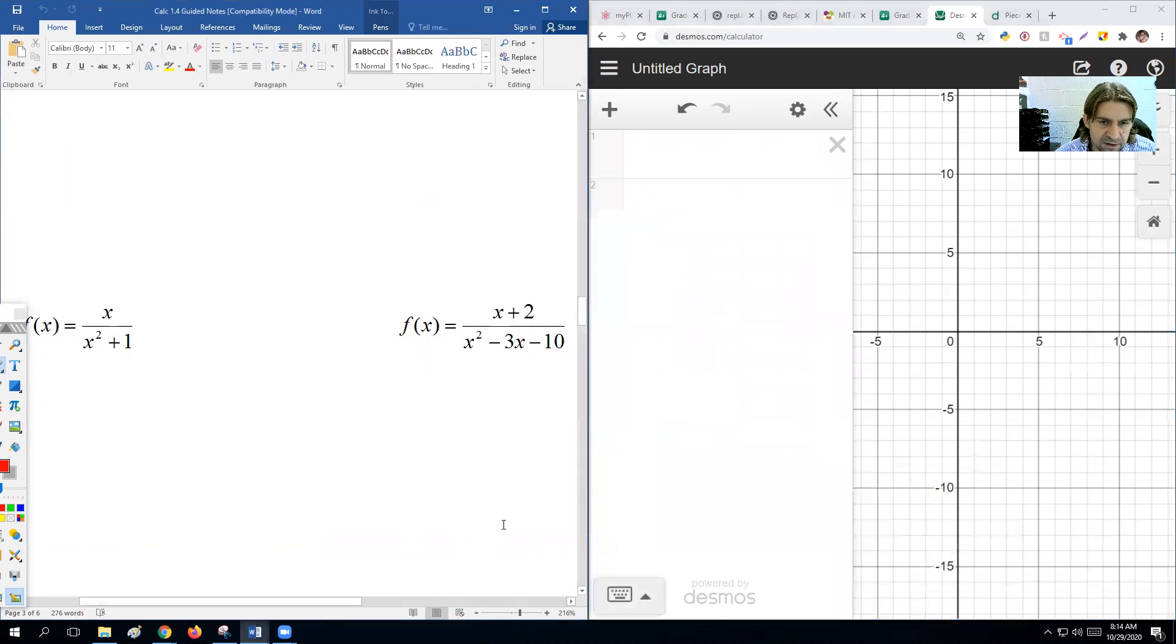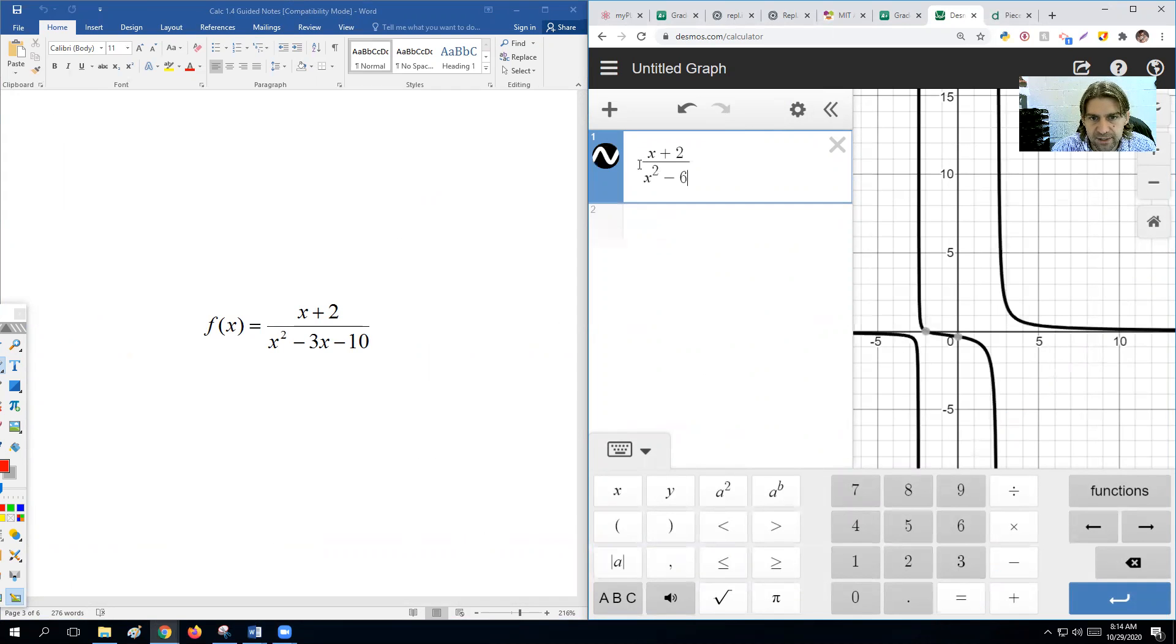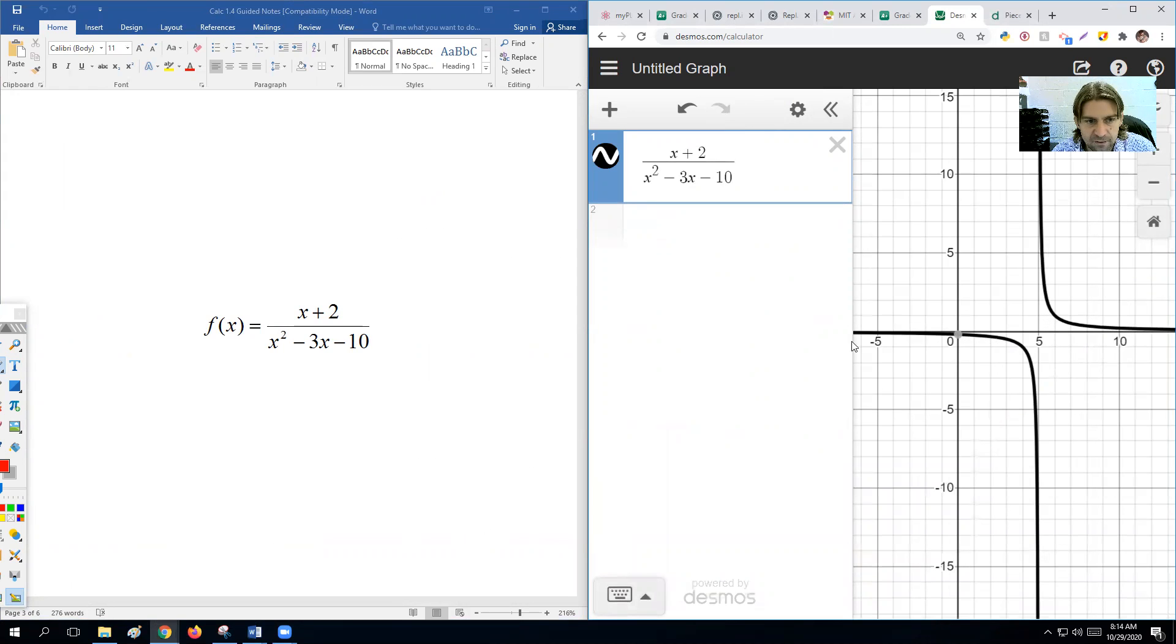Just to show you guys too, we can always go back and just use Desmos to help us out to find these. Like if I wanted to go back to this one here, we had a hole and a vertical asymptote. So x plus 2 over x squared minus 3x minus 10. It's easy to find the vertical asymptote at 5. We still have to use our denominator because we wouldn't really see it on Desmos unless we slide over to see that there is a hole at negative 2. Those are always kind of hard to find the holes on a graph.